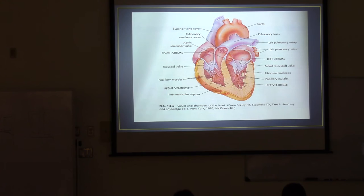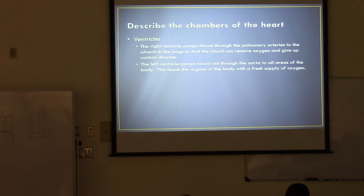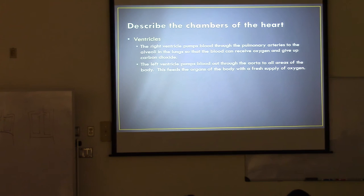The next chambers are the ventricles. The right ventricle pumps blood through the pulmonary arteries to the alveoli in the lungs so that the blood can receive oxygen and give up carbon dioxide. The left ventricle pumps blood out through the aorta to all areas of the body, feeding the organs with a fresh supply of oxygen.